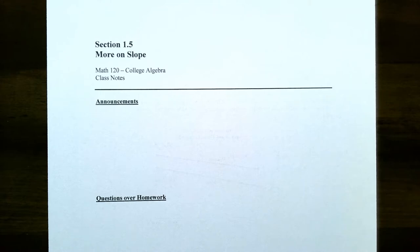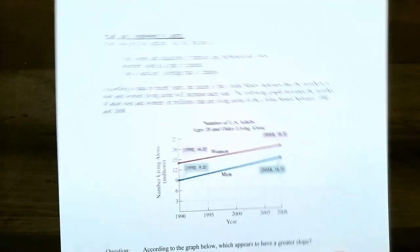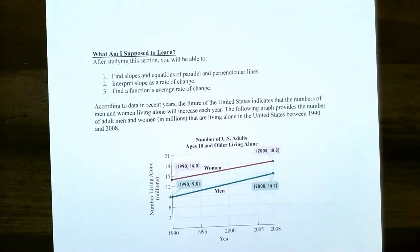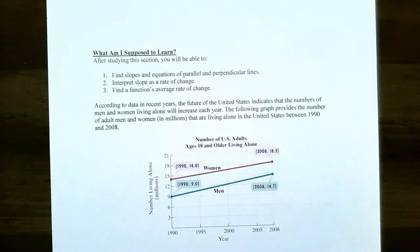Hi everyone, it's Professor Pemberton. In this video we're going to finish up our discussion on more on slope. We're going to talk about how to interpret slope as a rate of change and also how to find the function's average rate of change over a closed interval.